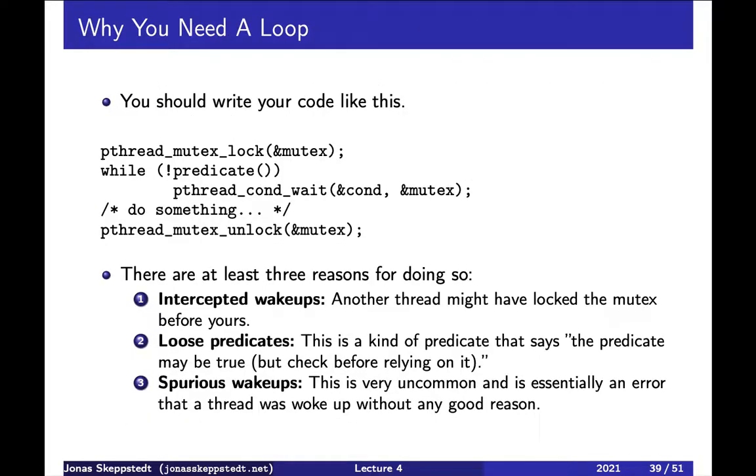So what we should do is to lock the mutex, check if everything is fine, so that we can do something with the data protected by the mutex. And if this is not the case, then we wait, and give both the condition variable and the mutex to this function.